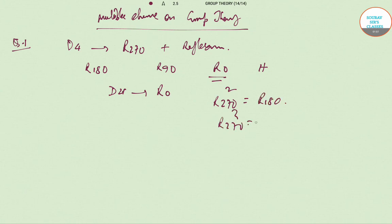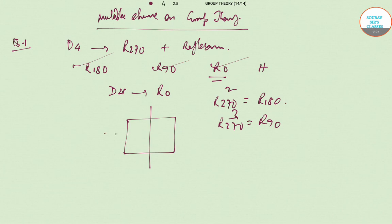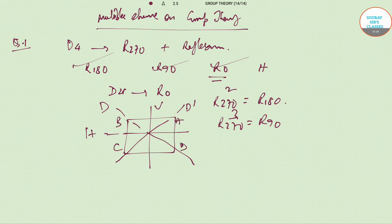R270 cubed gives R90. So it must also contain R180, R90, and R0. Looking at the diagrammatic pattern, H, D, D-dash, V, A, B, C, and D are all present. So the subgroup contains all elements of D4, and hence all four options are correct.